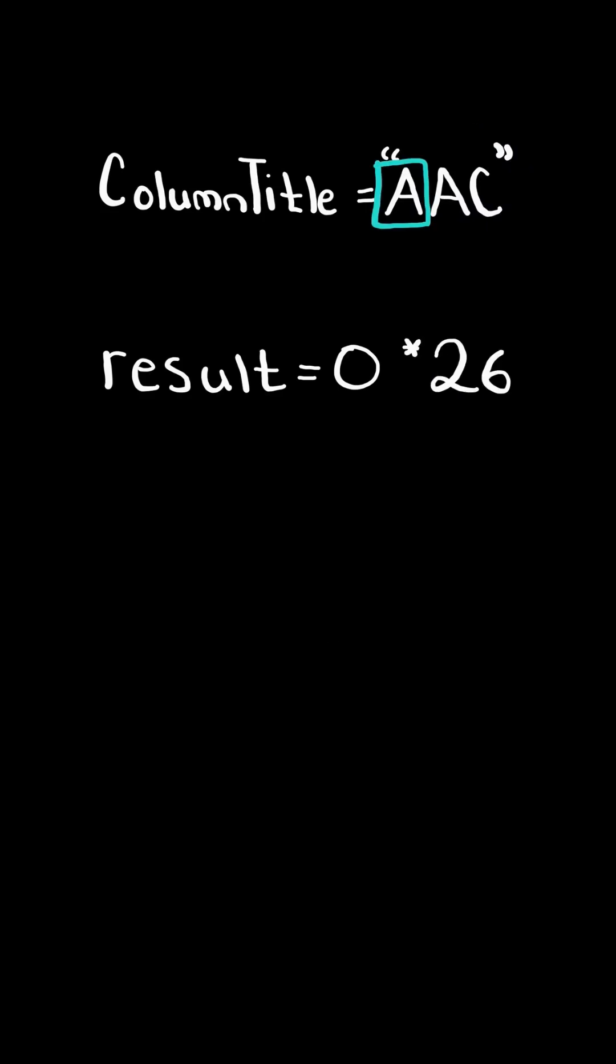We first take the result and multiply it by 26, and we add this to the expression below. Ord is a built-in Python function that gives us the ASCII value of a character. In this case, the character we are on is an A, and the ASCII value for A is 65.